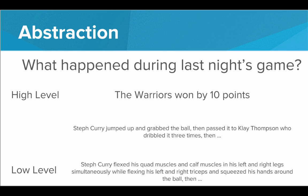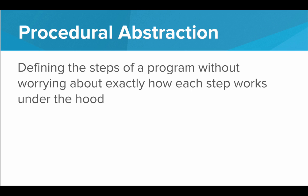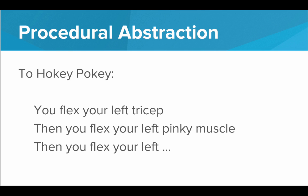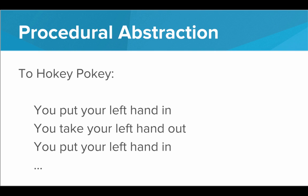How does this relate to computer science? Well in programming we use a type of abstraction called procedural abstraction — that is defining the steps of a program without worrying about exactly how each step is going to work under the hood. Imagine we were writing a program to do the Hokey Pokey. We could write the program as: flex your left tricep, then flex your left pinky muscle, talking about every single muscle you need to flex on the left side of your body. But this is so complicated and the program is going to be full of nonsensical information about flexing each muscle. Instead what we want to do is write a high-level program like: put your left hand in, take your left hand out, put your left hand in, shake it all about. This is much more simple and we can go in later and define exactly how you put your left hand in. But at a high level this program is done — we've solved it. This is procedural abstraction: not worrying about exactly how each step is going to work under the hood. We'll define that later if we have to.